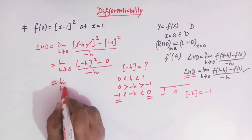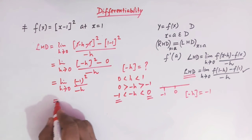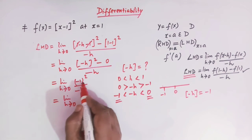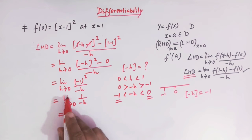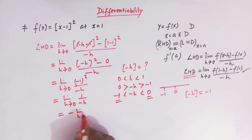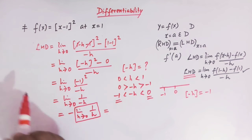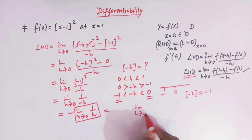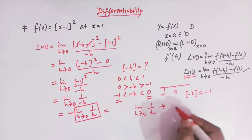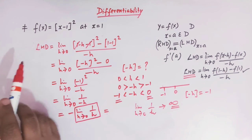So the left hand derivative becomes: limit h tends to 0 of (-1)² / (-h) = limit h tends to 0 of 1/(-h) = -limit h tends to 0 of 1/h. This limit does not exist because limit h tends to 0 of 1/h tends to infinity. Therefore the left hand derivative does not exist at x = 1.